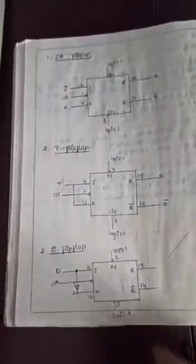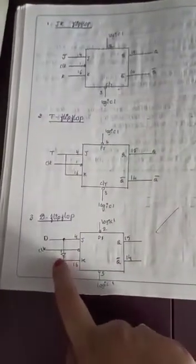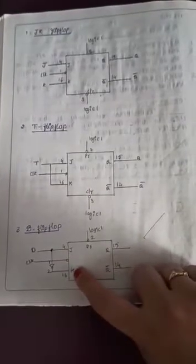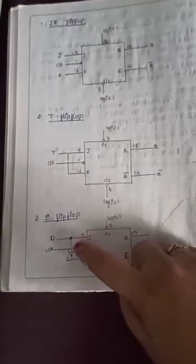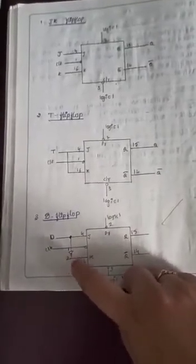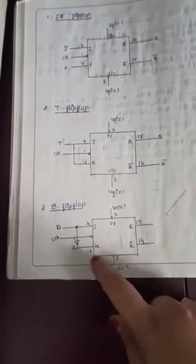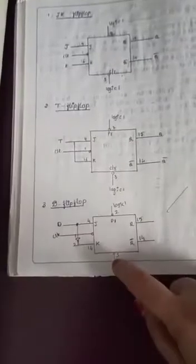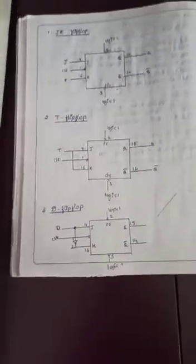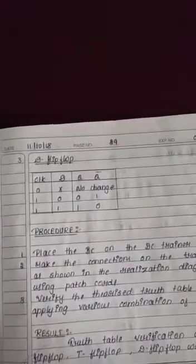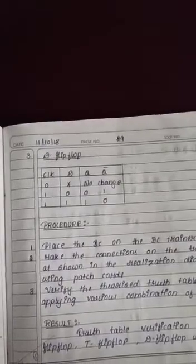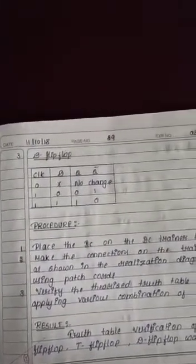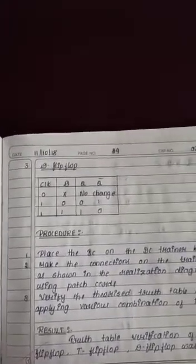Now look at the D flip-flop diagram. The input pin 4 is connected to a NOT gate, and the NOT gate output is connected to pin number 16. In D flip-flop, only one input is used — pin 4 is connected to pin 1 of the NOT IC, and the output of the NOT gate is connected to pin number 16. Both preset and clear are at logic high. The truth table: when clock is 0, no change; when clock is 1 and D is 0, Q is 0; when clock is 1 and D is 1, Q is 1.